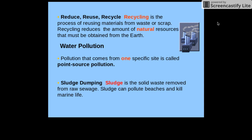Along with that goes emissions, just like we looked at before. Water pollution is one type of pollution we listed several previously. Pollution that comes from one specific site is called point source pollution. One example is sludge dumping — sludge is the solid waste removed from raw sewage. Wastewater treatment plants will remove the sludge and then dump it into a water source, which can pollute beaches and kill marine life.